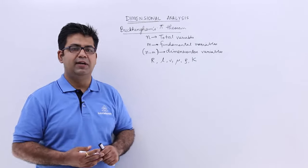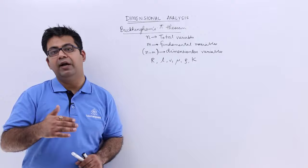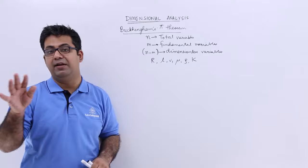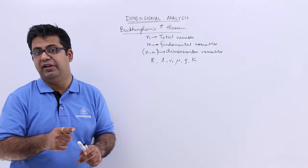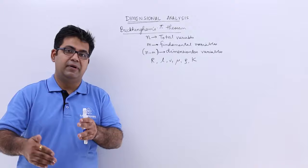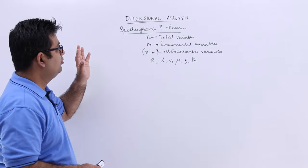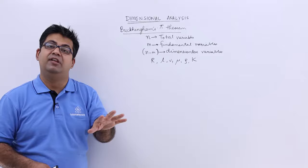Now let's look at the Buckingham Pi theorem. In Rayleigh's method, we looked at a method to solve the dimensional analysis problem when you have a maximum of four variables. When the variables increase beyond four, it becomes very complex to tackle the problem. With Buckingham Pi, we can be assured that tackling variables becomes very easy if they are more than four.